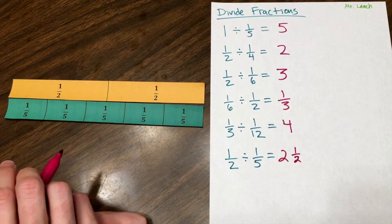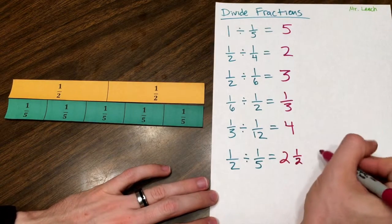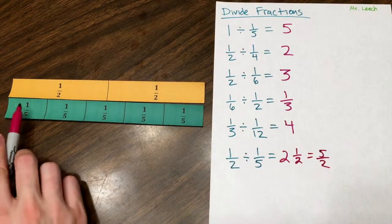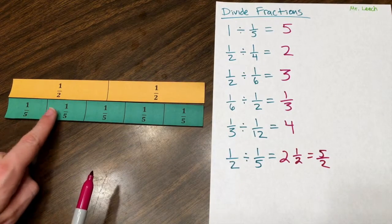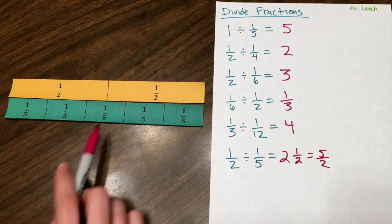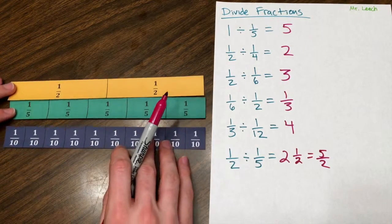If you were to write this as an improper fraction, this would be five-halves. Because that's one-half, second-half, third, fourth, fifth. If I were to split these up into halves, like you see with the tenths.